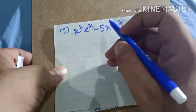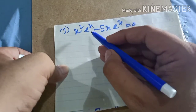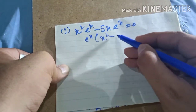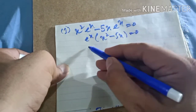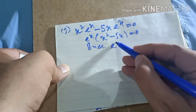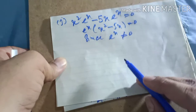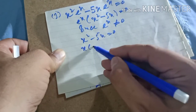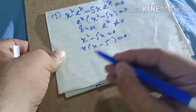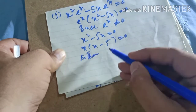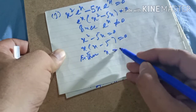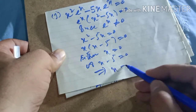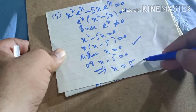Part j: we take eˣ common, leaving x² − 5x = 0. Since eˣ ≠ 0, we set x² − 5x = 0. Factoring: x(x − 5) = 0. So either x = 0 or x − 5 = 0, giving x = 5. Solutions are x = 0 and x = 5.